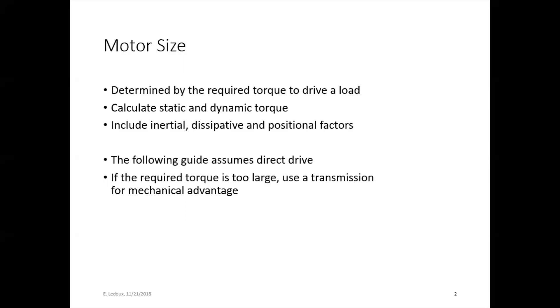This guide assumes direct drive, so that is when the motor and the load are directly connected. But if the required torque is too big, you can use a transmission, get a mechanical advantage, and then now whatever your transmission ratio is, your motor torque will go down by that much. So in that case, you can use a little motor, and the transmission is what will increase your torque.